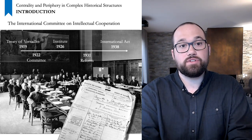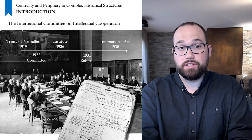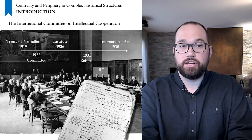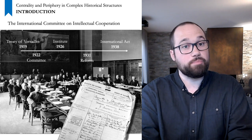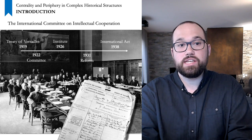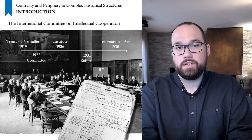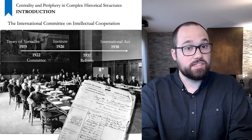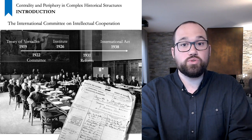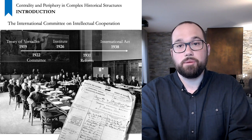But this institute became so large and independent that the League of Nations and the committee in Geneva reformed the organization in 1931 to better control its activities. In the second half of the 1930s, confidence in the League of Nations deteriorated and a number of states prepared an international act aimed at making intellectual cooperation independent of the League. The act was signed in 1938, but war broke out soon after, before it could even come into force.